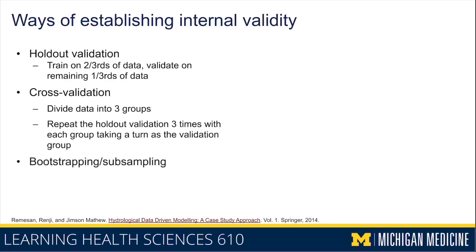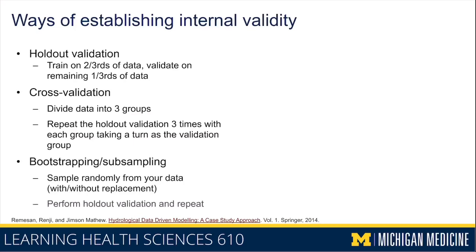Another way of establishing internal validity is bootstrapping or subsampling. What you do is sample randomly from your data with or without replacement. If you sample without replacement, it's the same as holdout validation. If you sample with replacement, it's known as bootstrapping. You perform this process multiple times — maybe 50 or 100 times — and basically get an average of the model fit on data that it has not seen for different parts of your dataset.